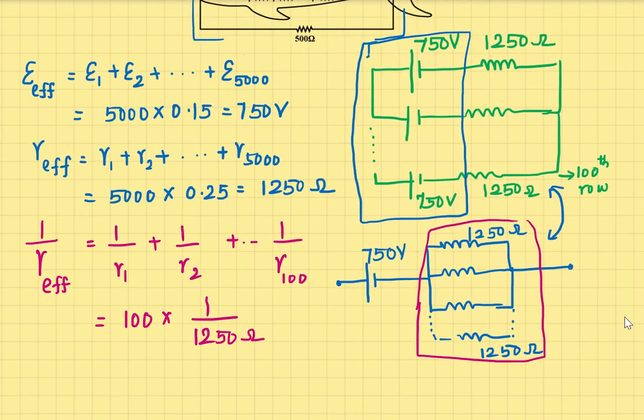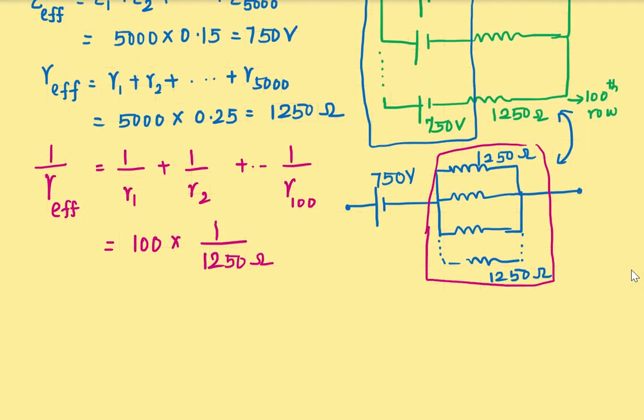Now 1/Rₑff is this much. So Rₑff will be inverse of it. So 1250 divided by 100 which is equal to 12.5Ω.